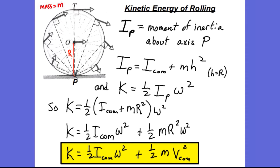We're looking at the example of rolling as pure rotation. The wheel is rotating about point P, and point P is not the object's center of mass. So to find the moment of inertia of the wheel about point P, we're going to have to use the parallel axis theorem.